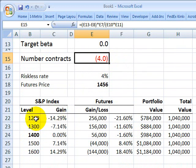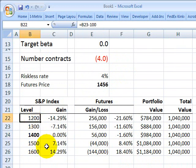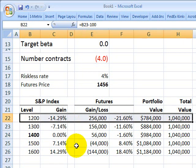We shorted the four contracts. Here I showed a few rows of different scenarios where the S&P index either goes down to, for example, 1,200 or up to 1,600. Here's the row where the S&P index value goes down.